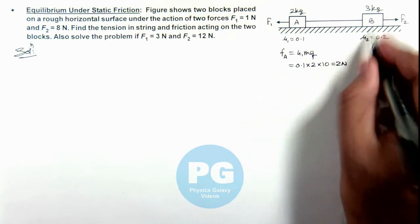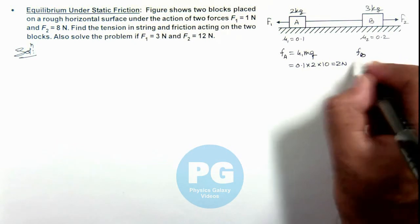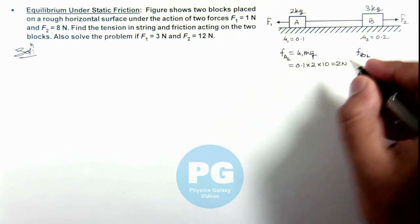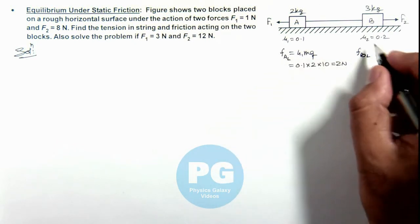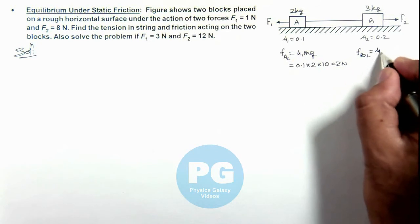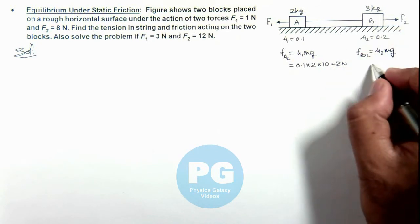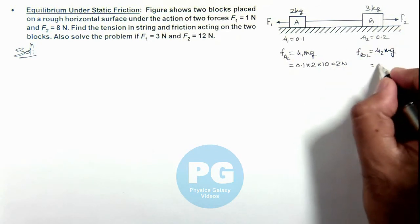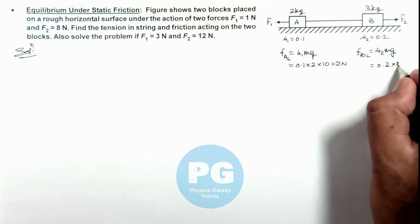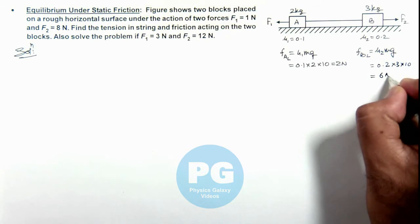Similarly, the limiting friction on block B, written as F_BL, will be mu2 times mg. The weight is different here, so this is 0.2 multiplied by 3 multiplied by 10, which gives 6 newton.